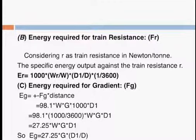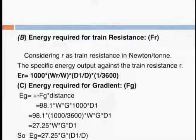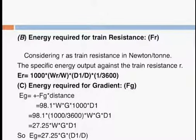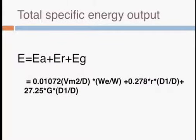The second equation is multiplied by W_r by W, multiplied by D1 by D, multiplied by 1 divided by 3600. For the energy required for gradient, denoted as E_G, when the gradient requires a tractive force we call it F_G. So the energy is F_G multiplied by distance, giving a final answer of 27.25 multiplied by G multiplied by D1 by D. This equation is obtained using the tractive effort required for overcoming the gradient. Finally, the total specific energy output is the addition of all three energies: those required during acceleration, to overcome train resistance, and to overcome the gradient, as shown in the final expression on screen.